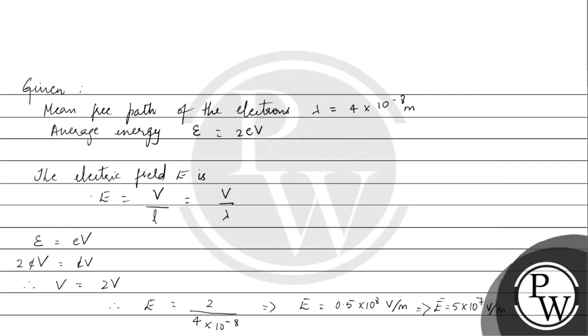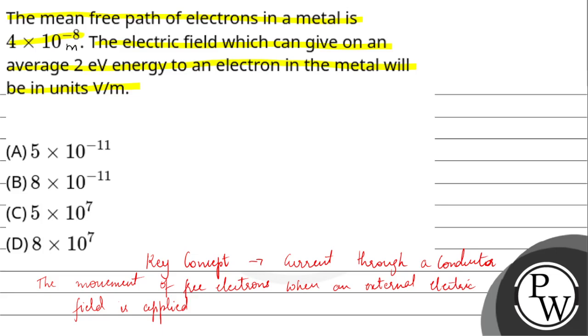So ab question pe ja ke hum correct option mark karenge. So the electric field which can give on an average 2 electron volt energy to an electron in the metal will be 5 into 10 to the power of 7 volt per meter. The correct answer is option C. Hope you have understood it well. Best of luck. Thank you.